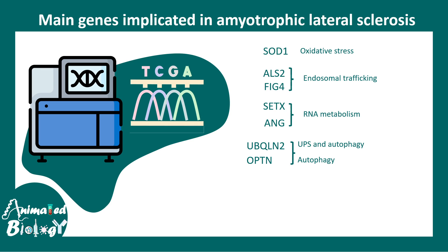High-throughput sequencing has identified many genes implicated in ALS. To name a few: SOD1, which codes for superoxide dismutase and regulates oxidative stress, is highly associated and well-studied in the context of ALS. Other mutated genes fall broadly under the categories of endosomal trafficking, RNA metabolism, and autophagy. Autophagy is the process by which old proteins and organelles are broken down and recycled — when this recycling is impaired, aggregation occurs in the cytoplasm, which is a key underlying pathophysiology of ALS.